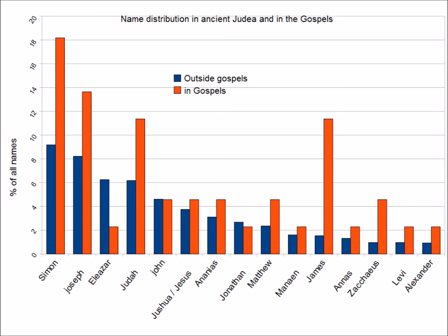The argument then goes on: the Gospel distribution does not fit with that of names from Egypt, and therefore it is likely that the history being related occurred in Judea. This is weaker on account of the small data set of Egyptian names available, but on balance it is reasonable.